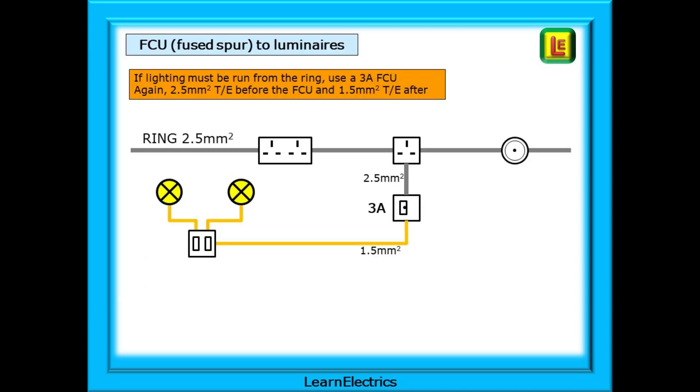If lighting must be run from the ring, use a 3 amp FCU. This will happen where, perhaps, a new conservatory has been added and it is all but impossible to extend the existing lighting into the conservatory. Again, 2.5mm twin and earth before the FCU and 1.5mm after.